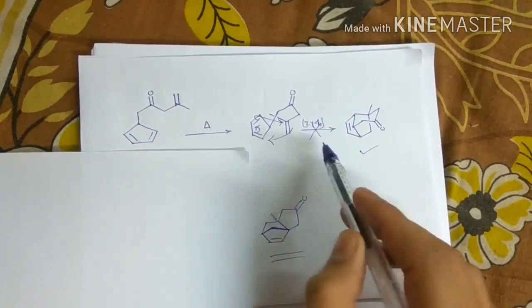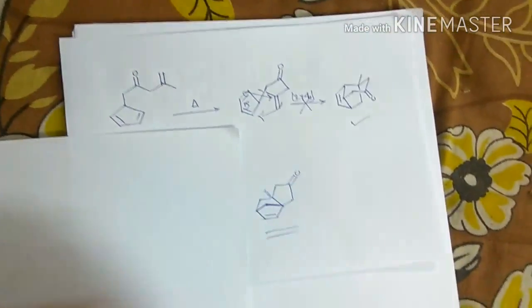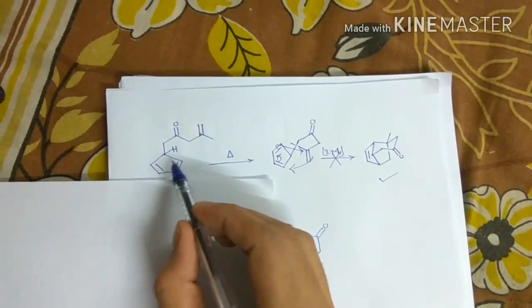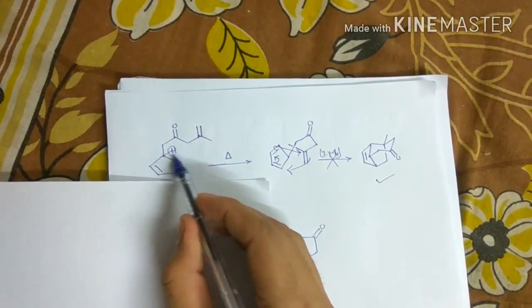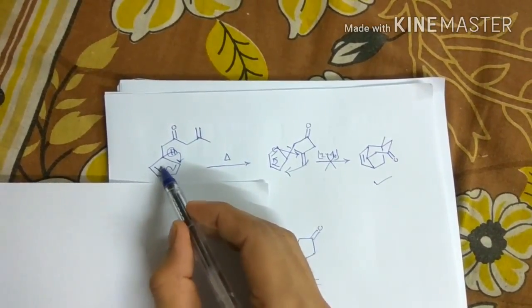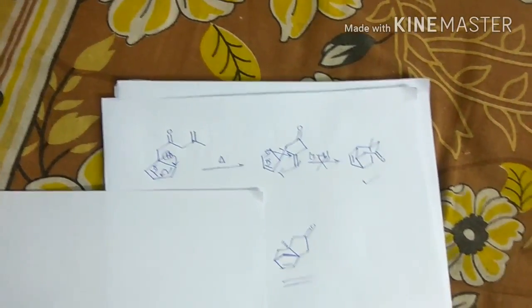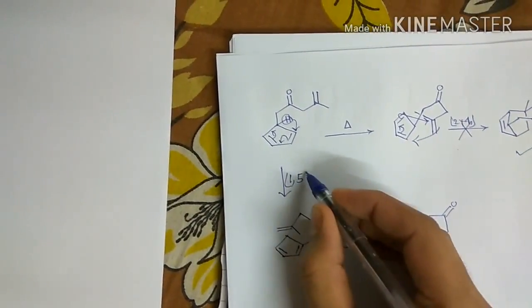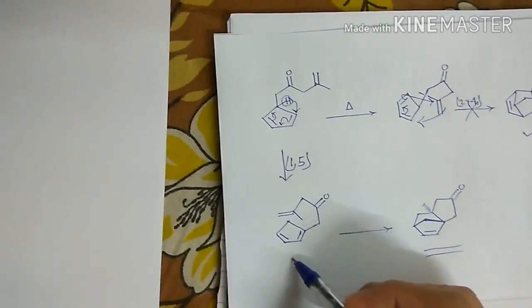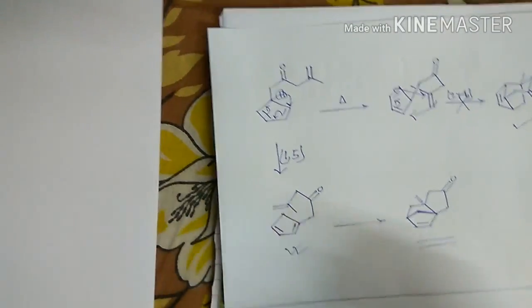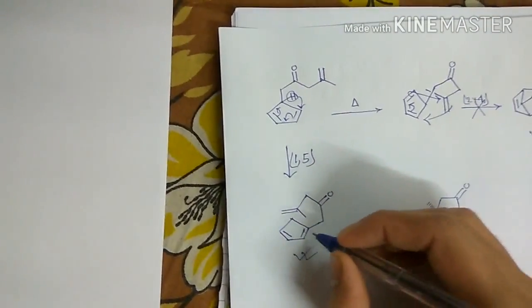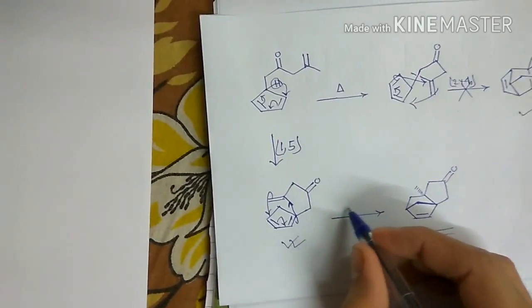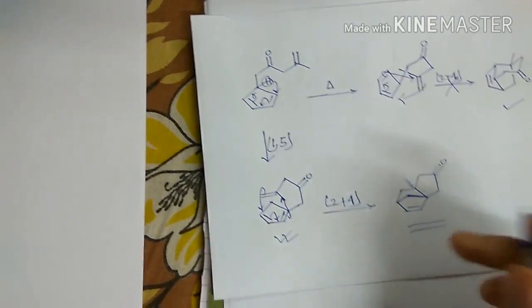One is Diels-Alder which we discussed, and another one is sigmatropic shift. So here is the hydrogen atom. And here a sigmatropic shift of this hydrogen atom to here is possible, which is a 1,5 sigmatropic shift. So this 1,5 sigmatropic shift will lead to this product.